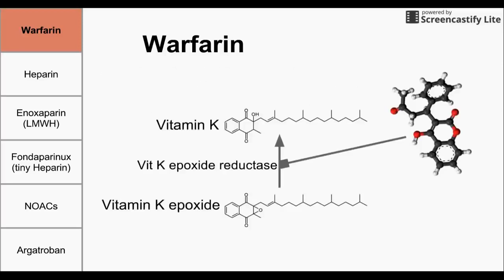Vitamin K in the body, when it's used to make these factors, becomes vitamin K epoxide. In order to regenerate vitamin K, we have an enzyme called vitamin K epoxide reductase. Warfarin, shown on the right here with those three rings, inhibits vitamin K epoxide reductase, which inhibits the regeneration of vitamin K, essentially causing an artificial vitamin K deficiency.